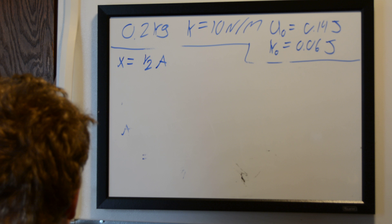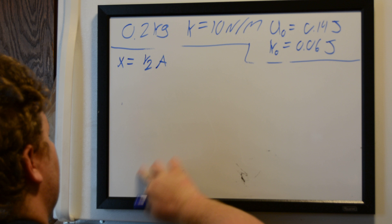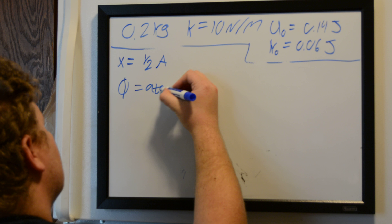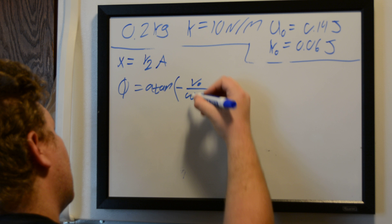So first what we want to do is just put in the equation for the phase angle phi is equal to arctangent of negative velocity over angular frequency times our amplitude.